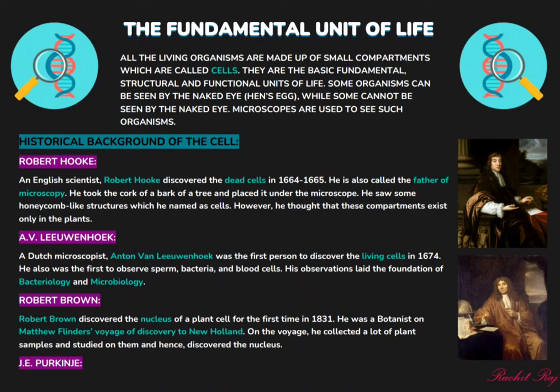Robert Hooke, who was an English scientist, became the first person to discover the dead cells in around 1665. He took the bark of a cork of a tree and placed it under the microscope. He saw something interesting — he saw some honeycomb-like compartments, and he gave them the name 'cells.'